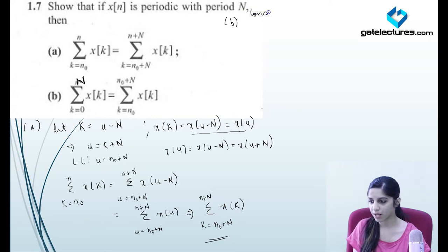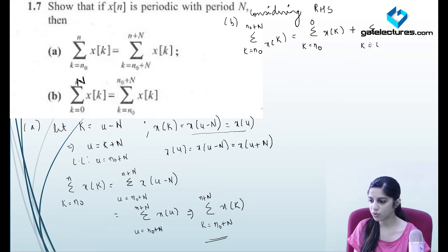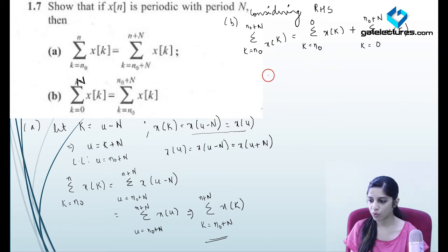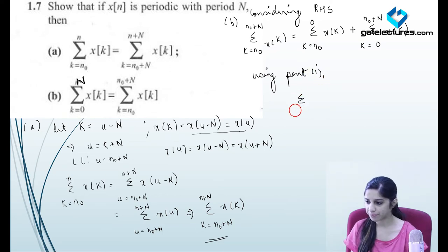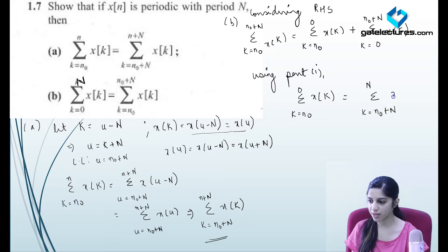For this part, I'm starting from the RHS and splitting the limits. The summation from n₀ to n₀ plus N can be written as summation from k equals n₀ to 0 of x[k], plus summation from k equals 0 to n₀ plus N of x[k]. Using the result of the first part, I can add capital N to both limits of the first summation, making it k equals n₀ plus N to N of x[k].